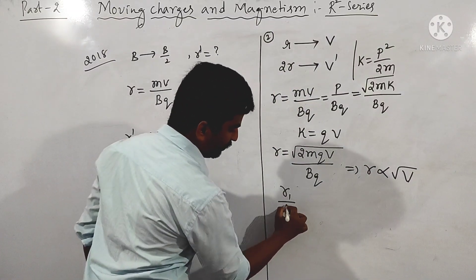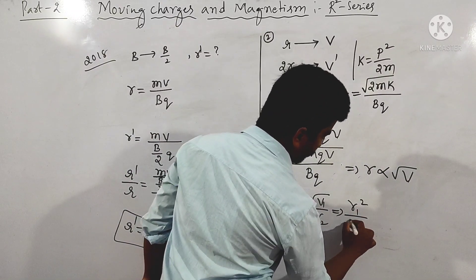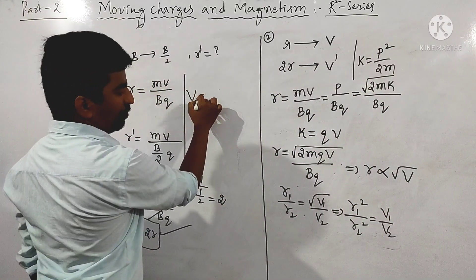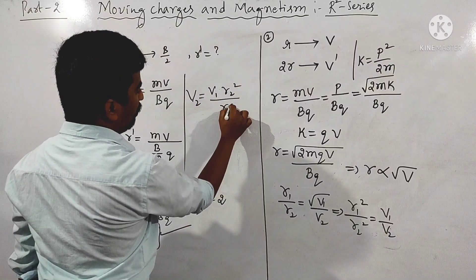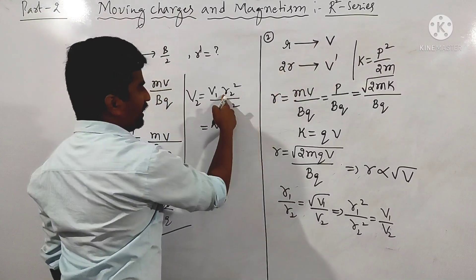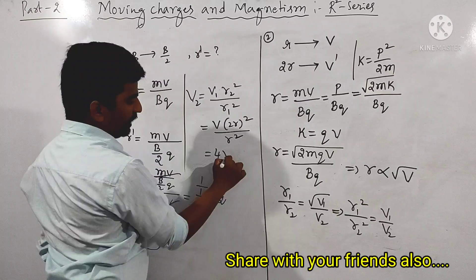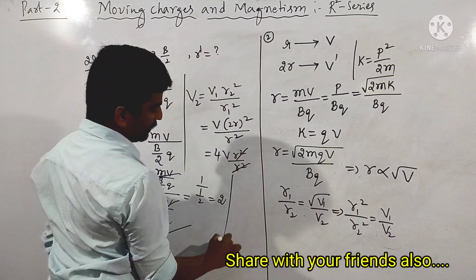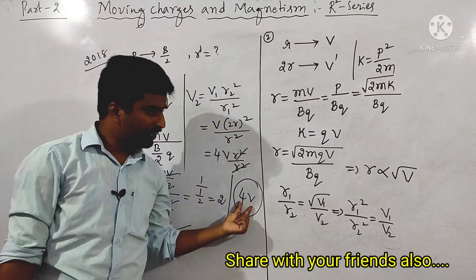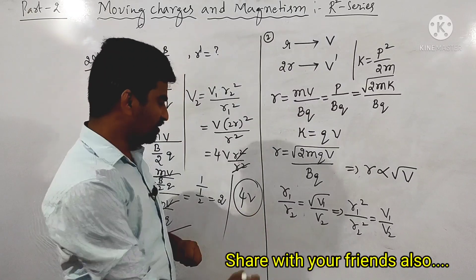Substituting: radius increases 2 times, so R2 equals 2R1, and V1 equals V. Therefore V2 equals V times (2r/r) squared equals V times 4 equals 4V. The r squared terms cancel. So when the radius is increased 2 times, the required potential difference increases 4 times. The answer for the question is 4V.